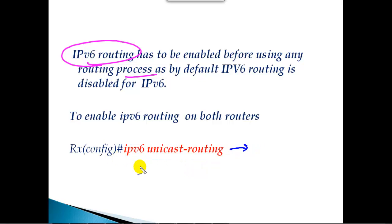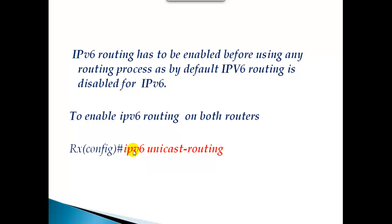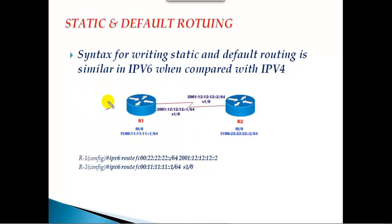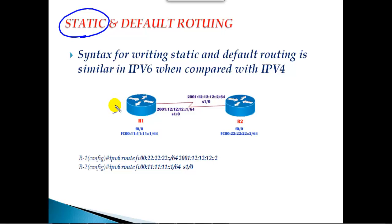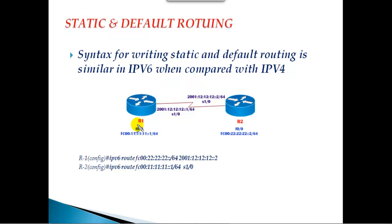You need to make sure you enable the 'ipv6 unicast-routing' command before starting any routing configurations. Now let's move on with static routing. The concept of static routing is exactly the same as in IPv4, so I expect you to already know what static routing is and how to configure it. The syntax for writing the static route and the default route is very similar in IPv6 compared to IPv4.